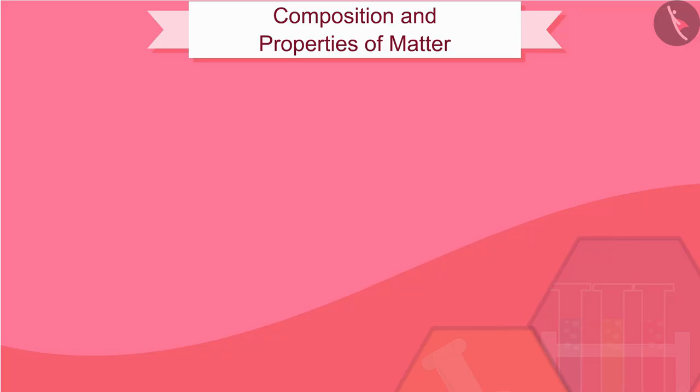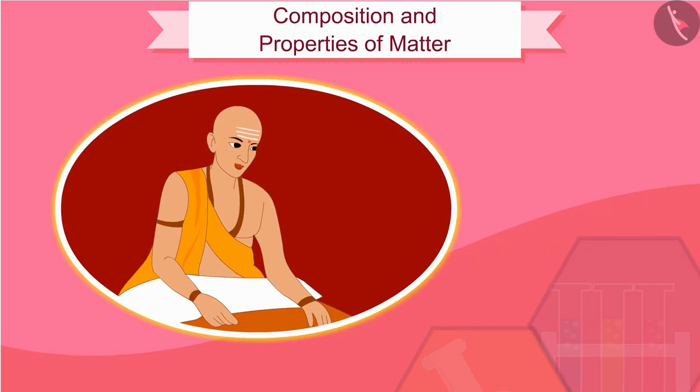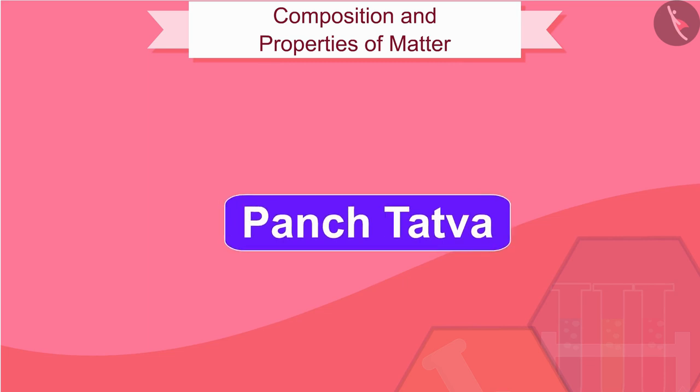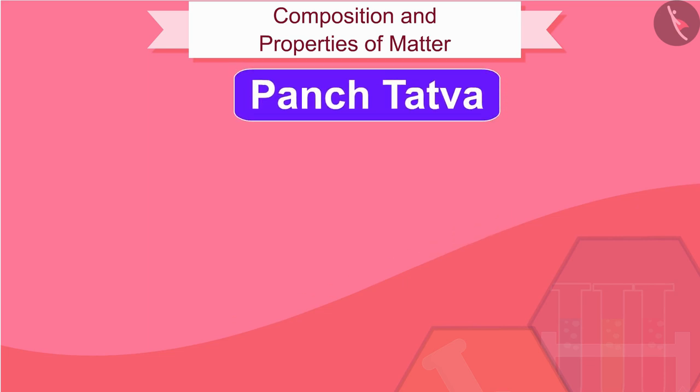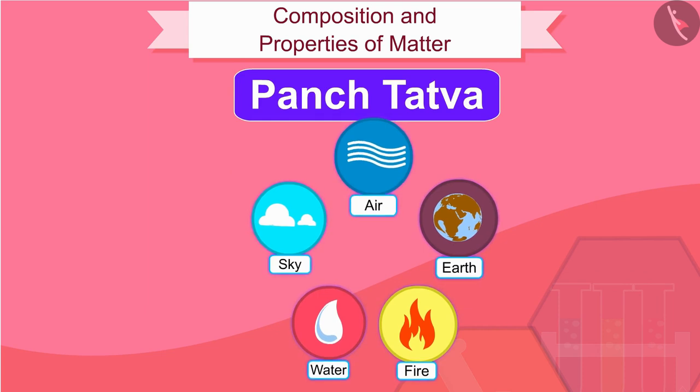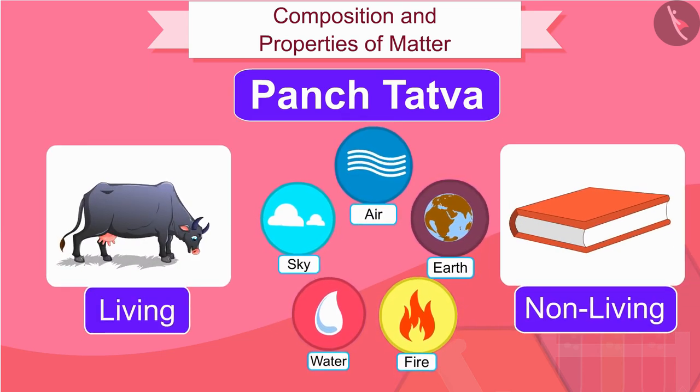Early Indian philosophers classified matter in the form of five basic elements which we know as Panch Tattva. These are the five elements: air, earth, fire, water and sky. According to them, everything living or non-living was made up of these five basic elements.